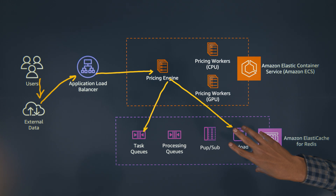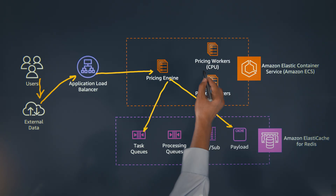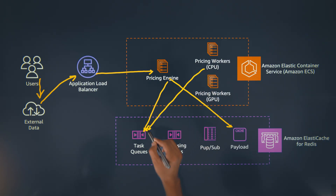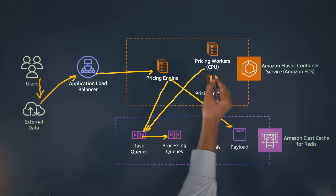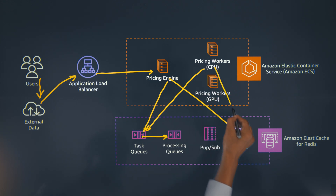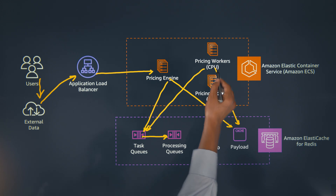A subset of that market data gets into the payload — the trade information as well as market data will be stored in the payload. The worker will monitor the task queue. The CPU worker, once it finds the task queue has an item, will pop one and put it into the processing queue. Then the pricing worker will retrieve that payload from Redis, go through a mathematical computation, and produce the result and store it back into Redis.